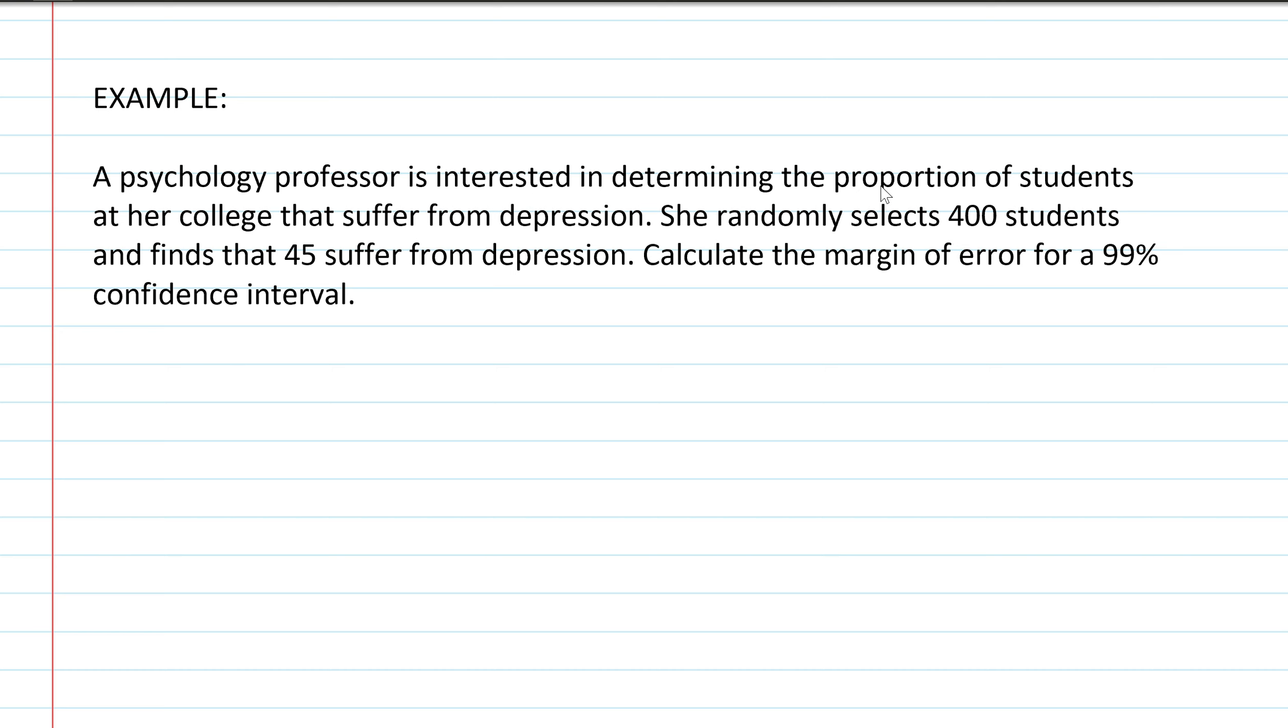Okay so our next example takes us into this situation: a psychology professor is interested in determining the proportion of students at her college that suffer from depression. She randomly selects 400 students and finds that 45 suffer from depression. So we're asked to calculate the margin of error for a 99 percent confidence interval. All right so it looks like here we're going to have to figure out the proportion of our p-hat and that's going to be using the 45 over the 400 total amount of students so that's going to be 0.1125. And in finding q-hat we just take one minus p-hat, so that's going to be 1 minus 0.1125 and crunching those numbers in the calculator gets 0.8875.